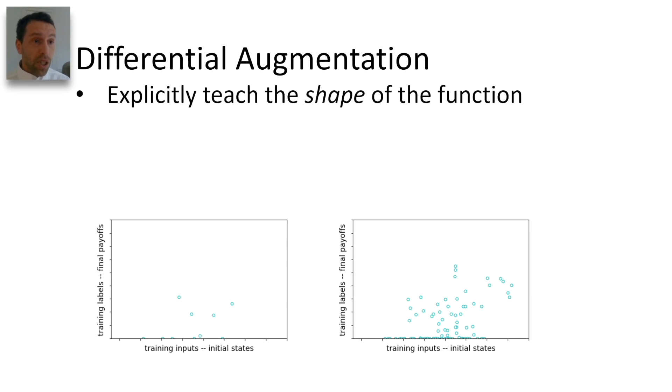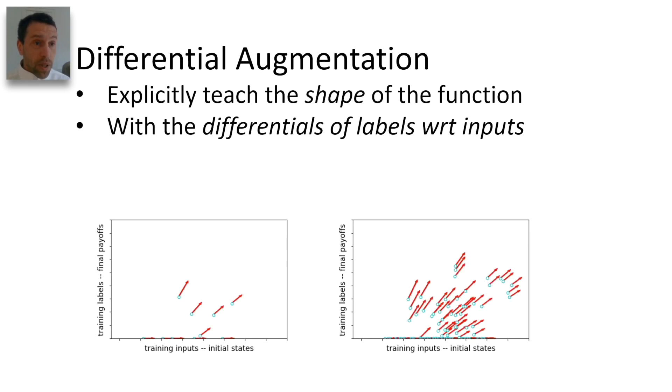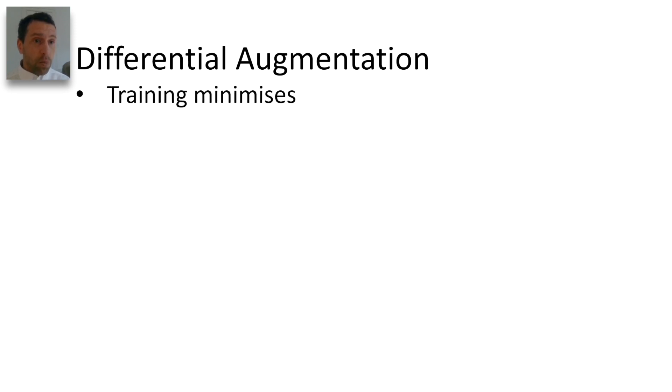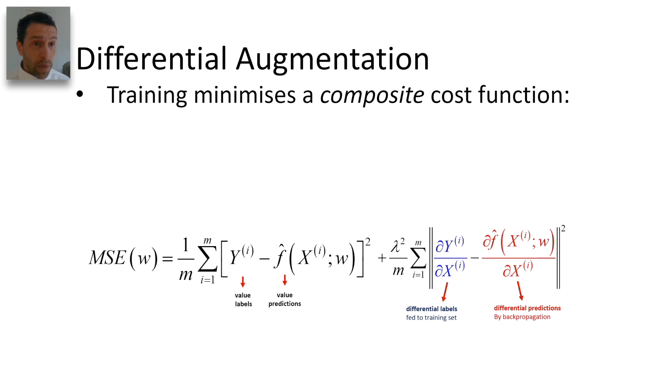We now explicitly teach the machine the shape of a pricing function, with the differentials of labels with respect to training inputs. We minimize the composite cost function, combining the classic MSE between value labels and value predictions, with the MSE between differential labels and differential predictions.